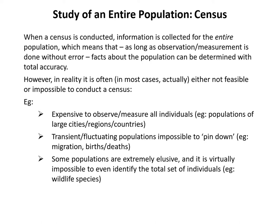When you do a census, you're collecting information from the entire population. So as long as your observations or measurements are done correctly without error, the data you obtain from the population gives you a certain picture of the population with what we might call total accuracy.